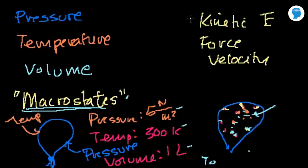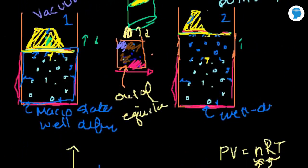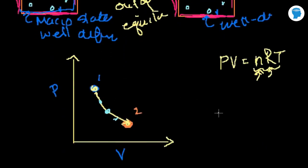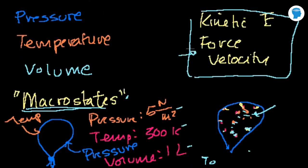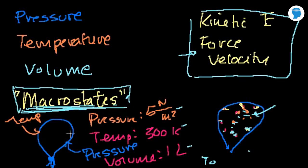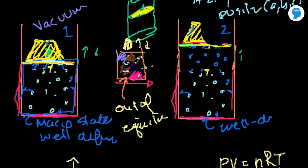Just as a little aside: we could have defined the microstates — microstates are always well-defined. At any given snapshot in time, I could list every particle, give you its kinetic energy, its position, its momentum. So microstates are always well-defined. Macrostates, on the other hand, are only well-defined when the system is in equilibrium — when you can say the pressure is the same throughout, the volume isn't changing from moment to moment, and the temperature is uniform throughout.